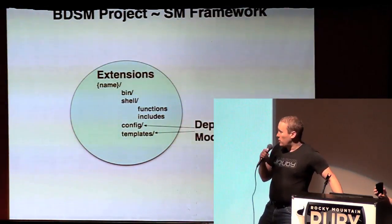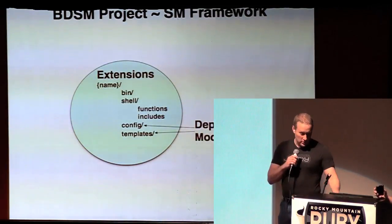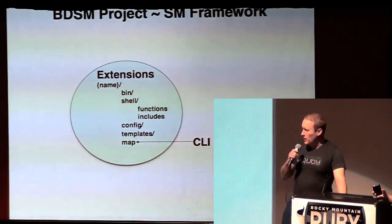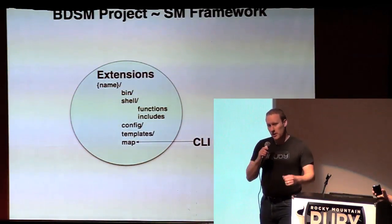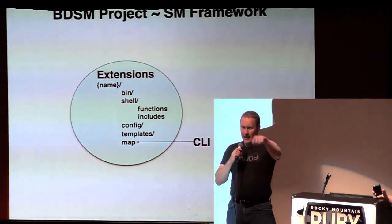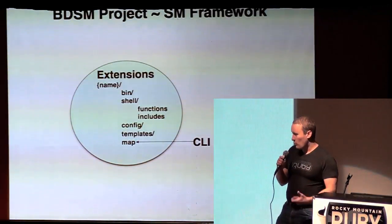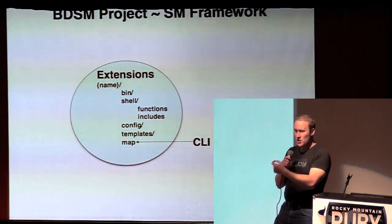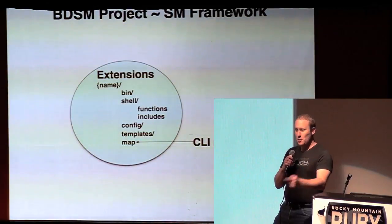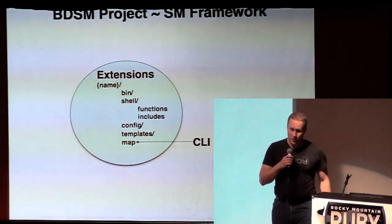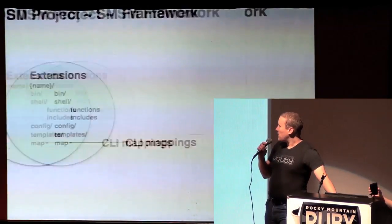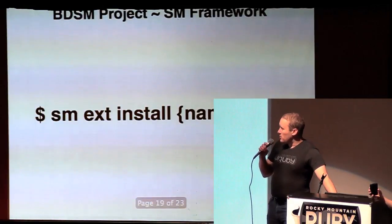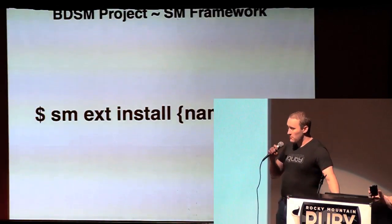Depending on what modules you include, you may have other auxiliary directories like configuration templates. There's also a useful CLI mapping file, which basically allows you to map command line actions. For example, I have a deploy extension I'm working on — you can type 'sm deploy', and in the bin directory of that extension there are no files. It's actually being mapped to a shell function in the functions file. If you're a good extension developer, you also have a version and you keep them versioned. You can install them easily with 'smext install name URI'.